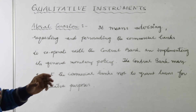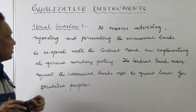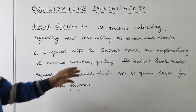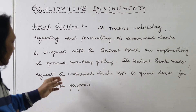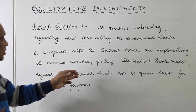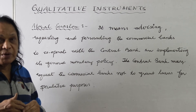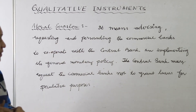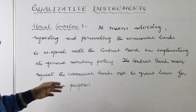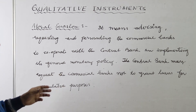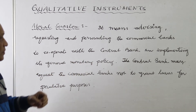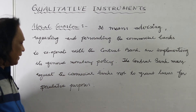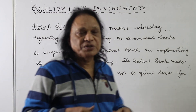Moral suasion means advising, requesting, and persuading the commercial banks to cooperate with the central bank in implementing its general monetary policy. The central bank may request the commercial banks not to grant loans for speculative purposes.